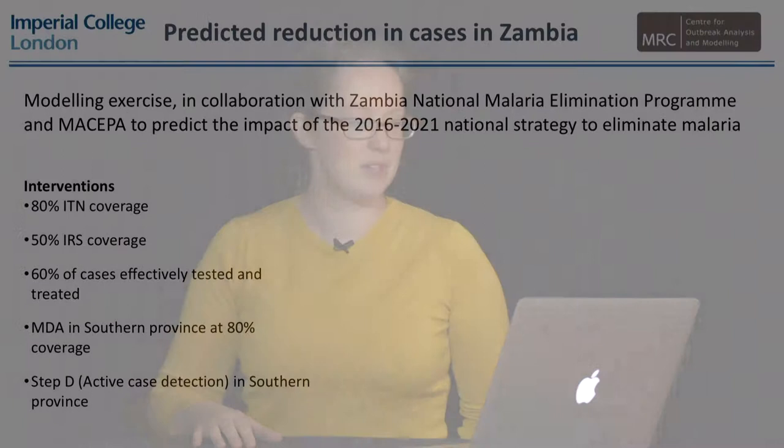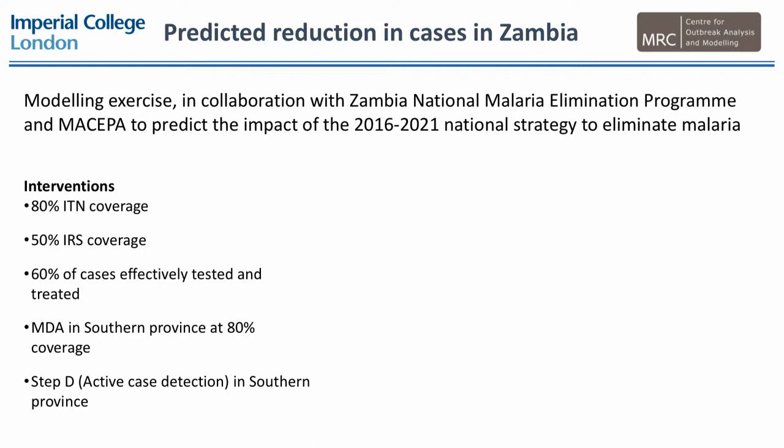We worked with our partners to understand what's the most likely set of interventions to be implemented going forwards. This came up with 80% bed net coverage across the whole country, 50% IRS coverage, 60% of cases effectively tested and treated, a mass drug administration in southern province only at 80% coverage, and active case detection in southern province where index cases that turn up to clinic will be followed by a community health worker to their home, and their house and neighbours will also be treated.